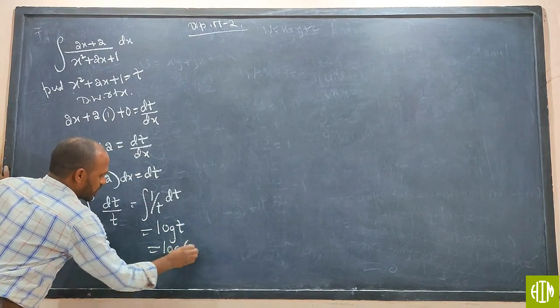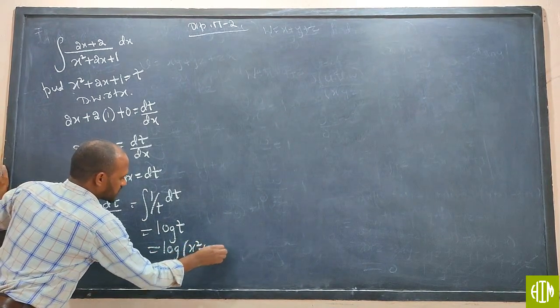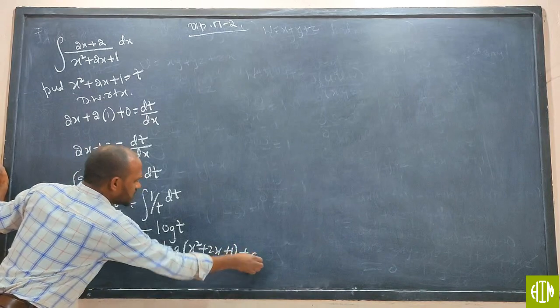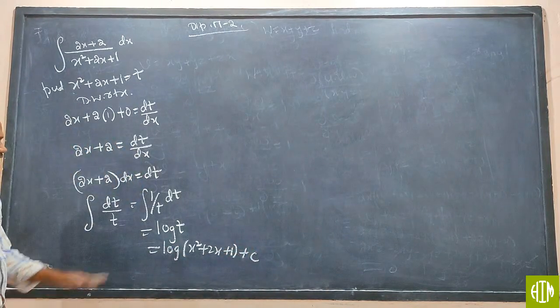But what is t? X squared plus 2x plus 1 plus c. Like this we have to do.